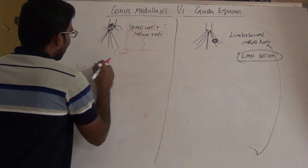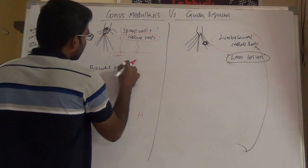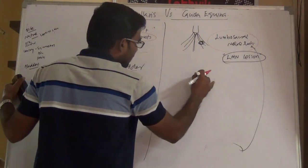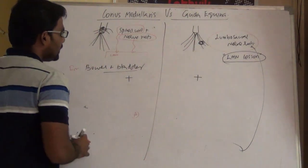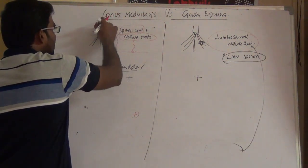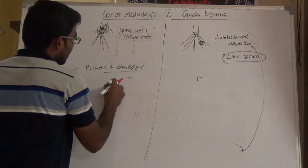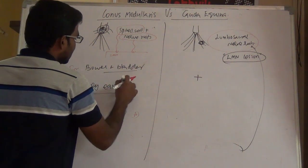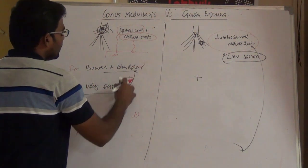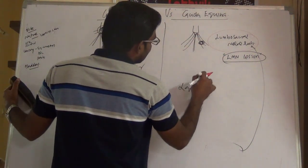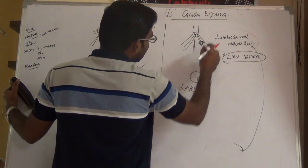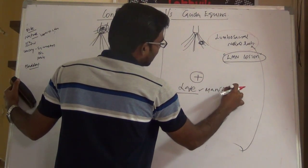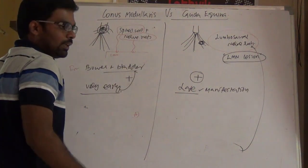Bowel and bladder involvement is seen in both conditions. However, in conus medullaris, because the spinal cord proper is involved, bowel and bladder dysfunction appears early. In cauda equina, bowel and bladder involvement is a late manifestation.